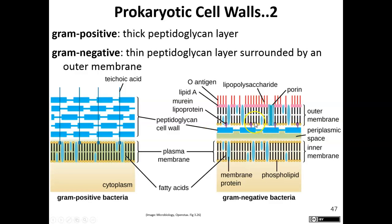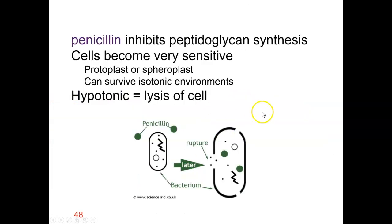Gram-negative bacteria have a second plasma membrane — an inner membrane like the standard cell membrane, and then an outer membrane. In the outer membrane they have special proteins and lipids that stick out, which allow us to identify gram-negative bacteria into different groupings.